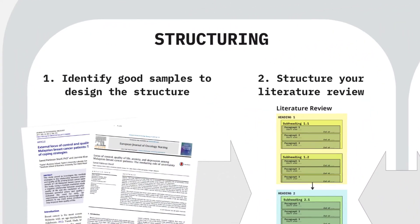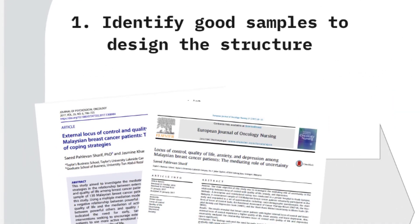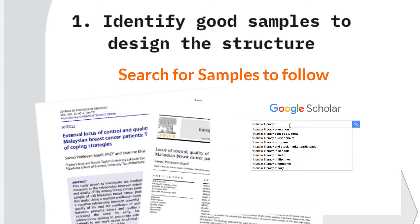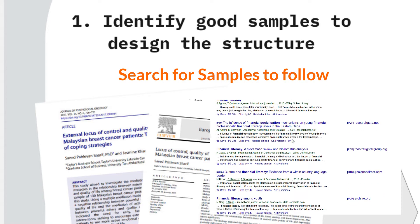Stage A: structuring your literature review. Step one — identify good samples to follow. To prepare a good structure for your literature review, start by searching for recently published studies and theses similar to your work, as well as reviews and systematic literature review papers on your topic as samples to follow. These samples will give you good ideas to structure your literature review. Depending on your topic and how niche it is, you may get around three to ten papers that are good and can be used as samples.